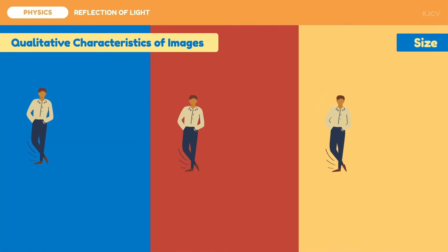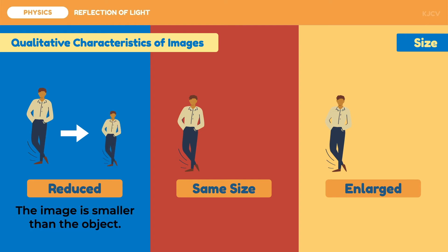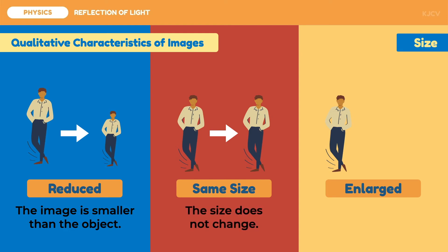For the next qualitative characteristic, we have the image size. There are three possibilities: images may either be reduced, same-sized, or enlarged. To describe the size of the image, we compare it with the original object size. For reduced, the image is smaller than the object. For same size, the size does not change. And for enlarged, the image is larger than the object.